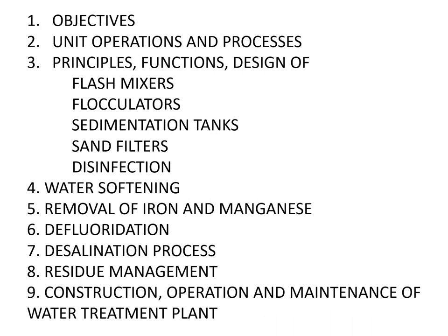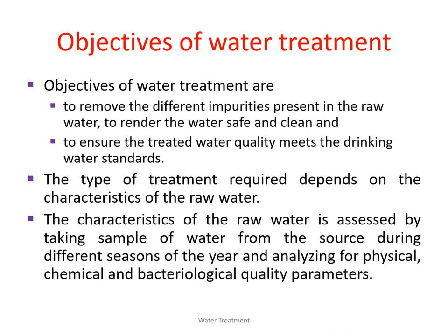We will see these topics one by one. Another topic is the operation and maintenance of a water treatment plant — what maintenance activities need to be done for the various treatment units available in the plant. Now we move to the objectives of water treatment. The main objective is to convert raw water into safe and clean water. If we convert water into clean and safe water, we can meet the drinking water standards available in government websites or the BIS standards.